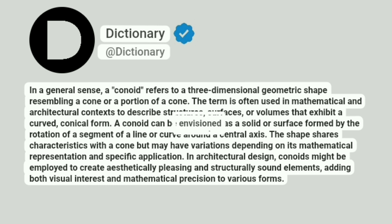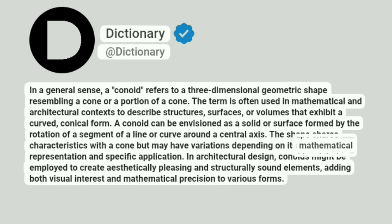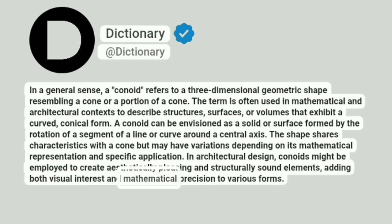A conoid can be envisioned as a solid or surface formed by the rotation of a segment of a line or curve around a central axis. The shape shares characteristics with a cone but may have variations depending on its mathematical representation and specific application. In architectural design, conoids might be employed to create aesthetically pleasing and structurally sound elements, adding both visual interest and mathematical precision to various forms.